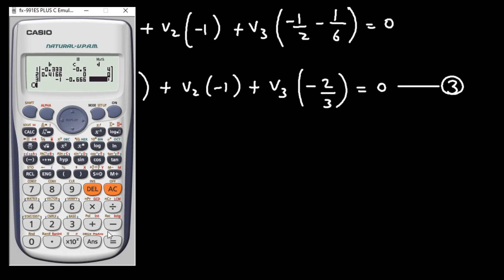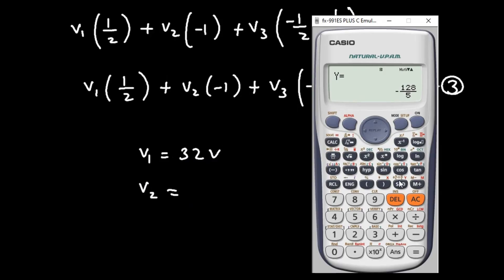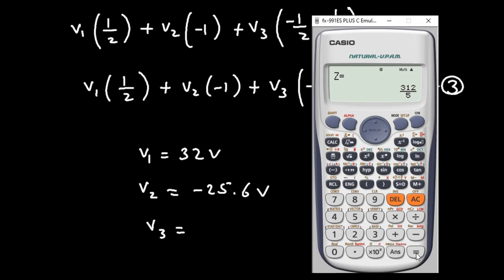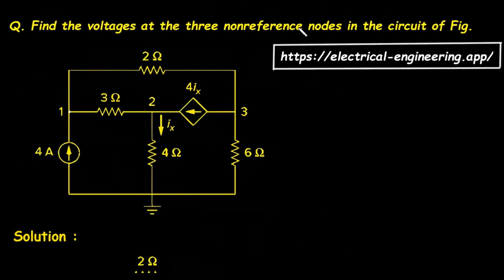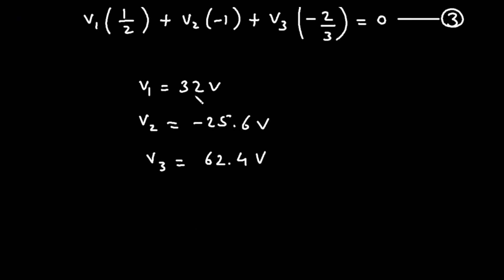The final answers are: V1 = 32 V, V2 = −25.6 V, and V3 = 62.4 V. These are the three non-reference node voltages V1, V2, and V3.